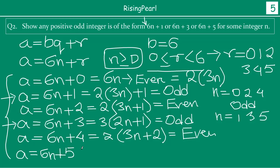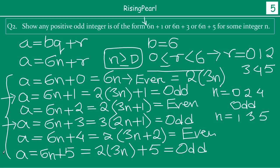For 6n plus 4: we can factor out 2 to get 2 times (3n plus 2) — multiplying any integer by 2 always gives an even number, so 6n plus 4 is always even. For 6n plus 5: we can write this as 2 times 3n plus 5 — since 2 times 3n is always even, adding 5 makes it always odd.